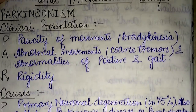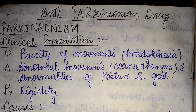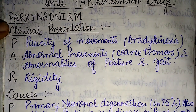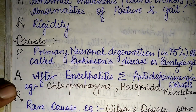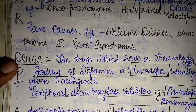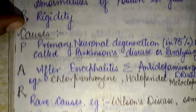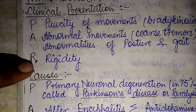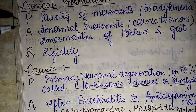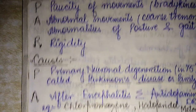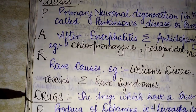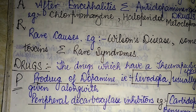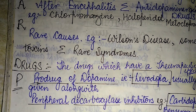Here I have summarized anti-Parkinsonian drugs using the mnemonic P, A, and R — the first three letters of Parkinson's. Under these three headings, I have covered the clinical presentation, the causes of parkinsonism, and the drugs used in its treatment. If you like my video, please subscribe and press the bell icon for further updates.